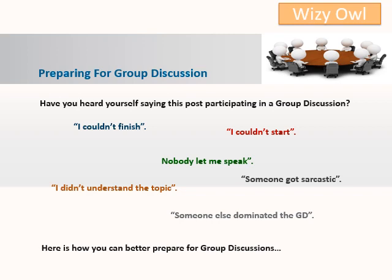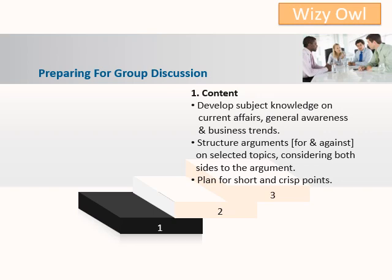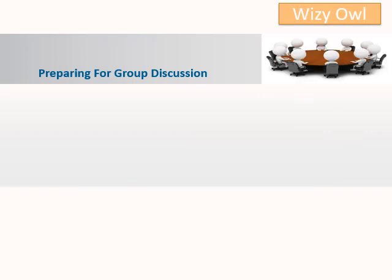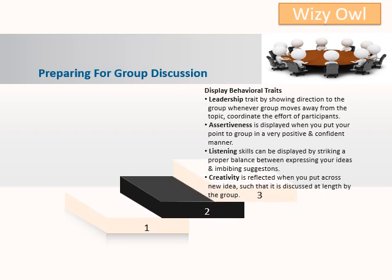Here is how we can better prepare for group discussions. Content: develop subject knowledge on current affairs, general awareness, and business trends. Structure arguments for and against on selected topics, considering both sides to the argument. Plan for short and crisp topics. Display behavioral traits: Leadership by showing direction to the group wherever it moves away from the topic. Assertiveness is displayed when you put your point to the group in a very positive and confident manner. Listening skills can be displayed by striking a proper balance between expressing your ideas and imbibing suggestions. Creativity is reflected when you put across a new idea such that it is discussed at length by the group.